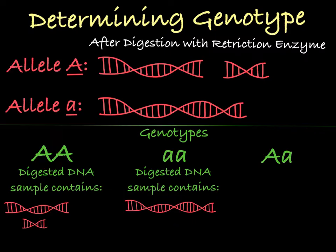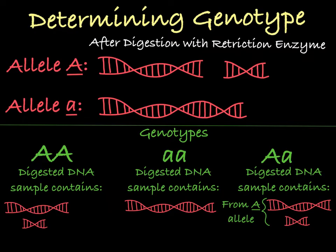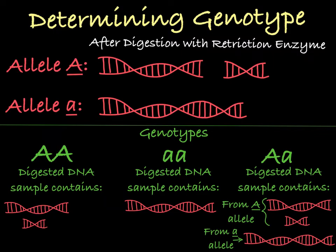When you isolate DNA from a heterozygote containing both the big A allele and the little a allele, half of the DNA you isolated has the allele with the restriction site that gets cut into two fragments, while the other half of this person's DNA will have the allele that does not have the restriction site and remains whole when a restriction enzyme is added.